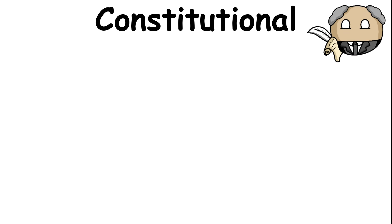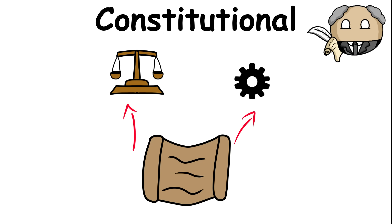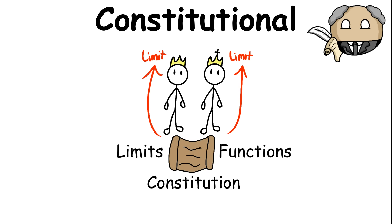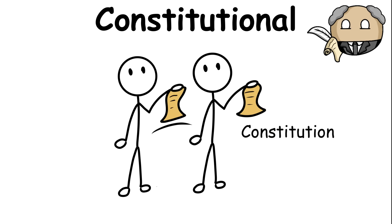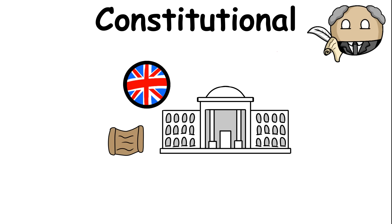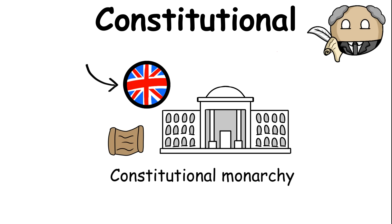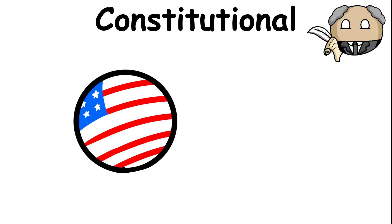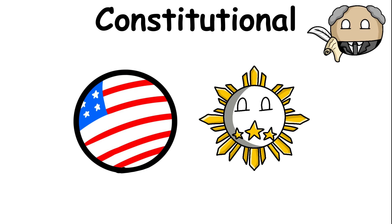A constitutional form of government is when a constitution acts as the foundation of the country's laws and systems. It is the constitution that defines the limits and functions of a government. In most cases, the constitution is enacted to extend the people's will. Constitutional governments come in many forms. For example, the United Kingdom is a constitutional monarchy that defines the limits of the monarch's powers. The United States is also a constitutional government but is a presidential form of constitutional democracy.